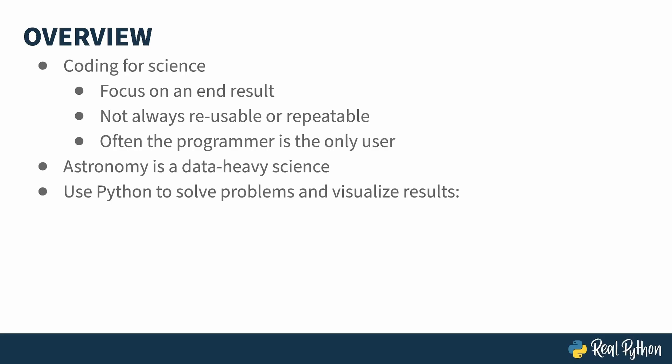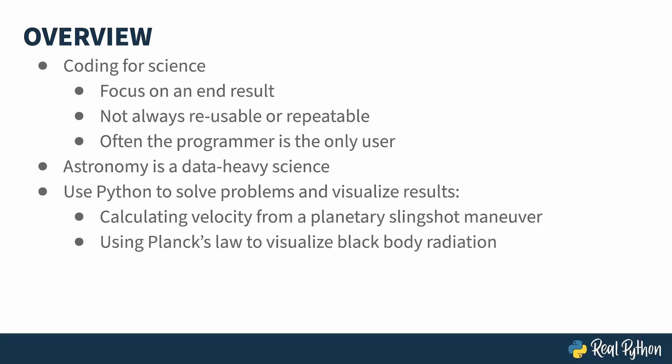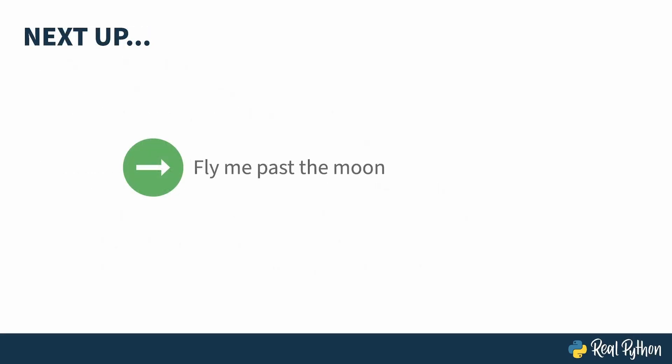This course uses Python to look at three different problems. The first is to calculate a spacecraft's velocity when using a gravity assist. The second crunches Planck's law and graphs the results to see what radiation a star of a certain temperature emits. And the third takes a data file and visualizes star properties in something called a Hertzsprung-Russell diagram, a chart that helped astronomers visualize the life cycles and evolution of stars. Let's get started by doing a flyby of Jupiter.